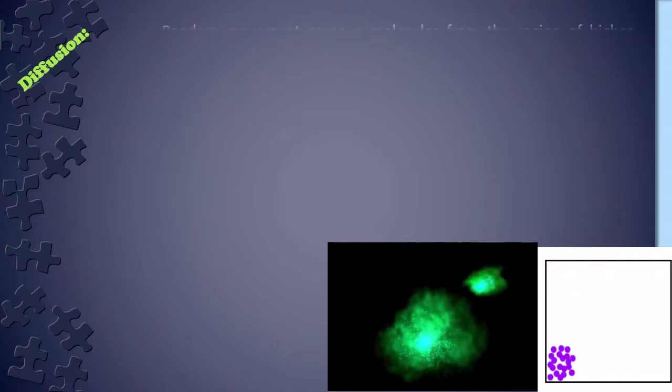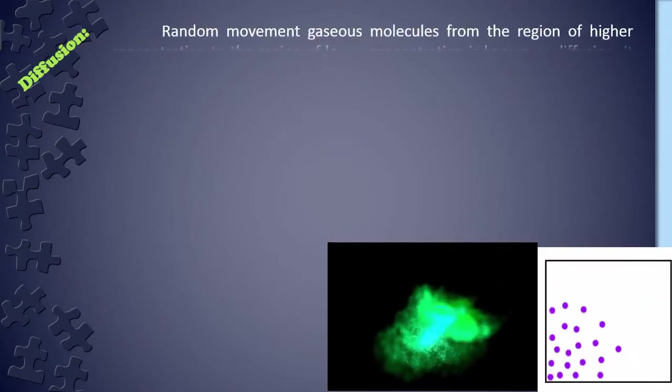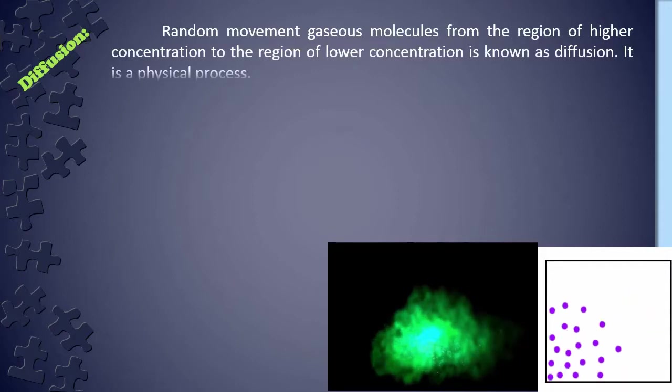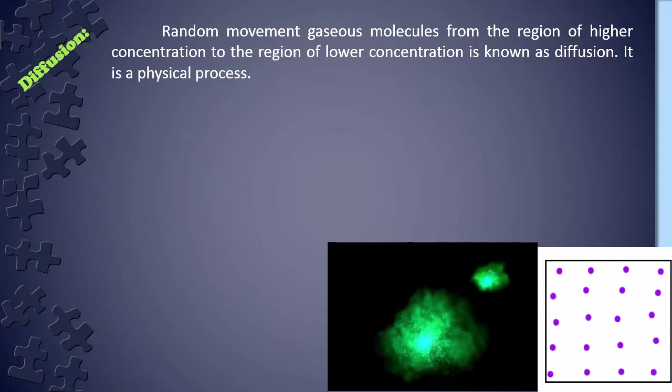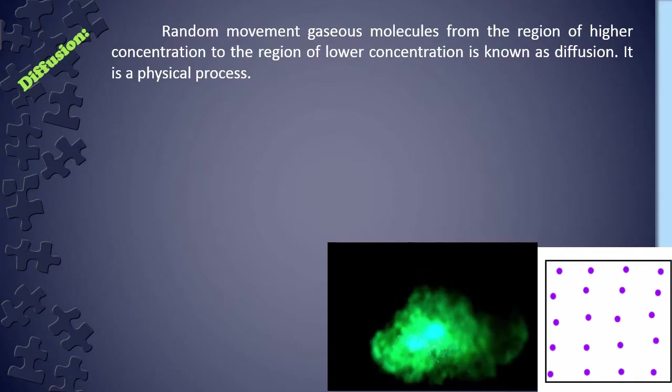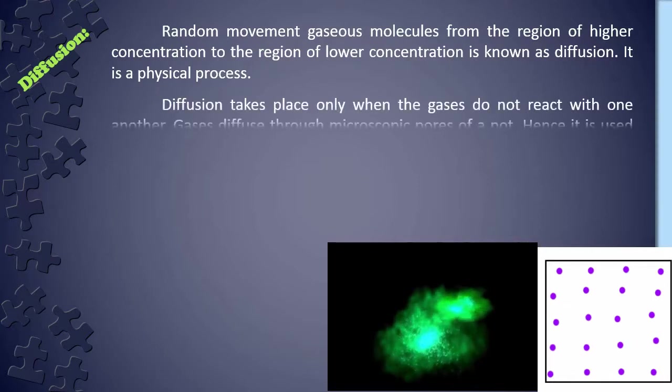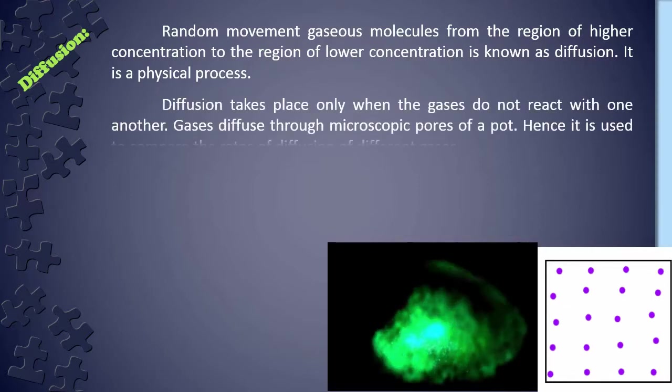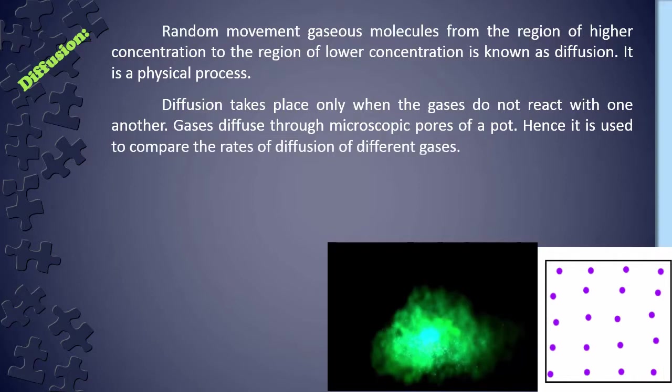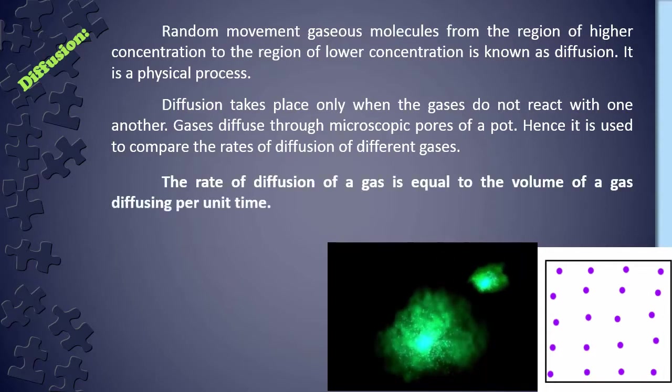Diffusion: Random movement of gaseous molecules from the region of higher concentration to the region of lower concentration is known as diffusion. It is a physical process. Diffusion takes place only when the gases do not react with one another. Gases diffuse through the microscopic pores of a pot. Hence, it is used to compare the rate of diffusion of different gases. The rate of diffusion of a gas is equal to the volume of a gas diffusing per unit time.